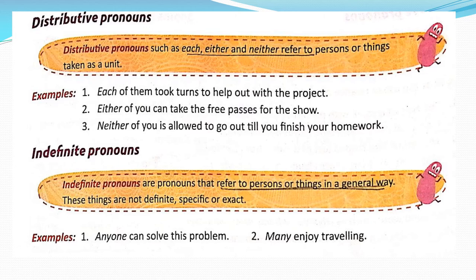That is why they always become singular and are followed by a singular verb. For example: 'Each of them took turns to help out with the sub-project.' 'Either of you can take the fee passes for the show.' 'Neither of you is allowed to go out till you finish your homework.'